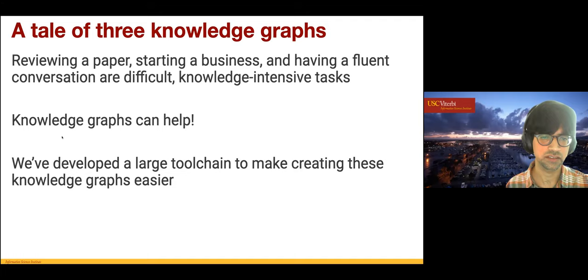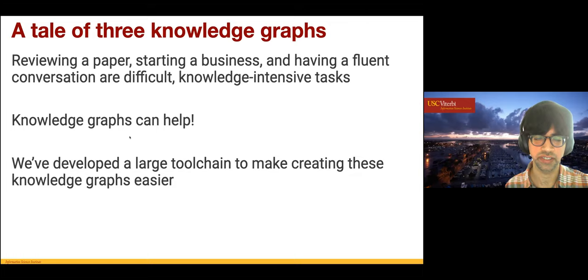To end: I told you about three knowledge graphs motivated by three hard problems — reviewing a paper and understanding its scientific context; starting a business where you need to understand competitors, relevant patents, and how to differentiate; and dialogue using AI agents providing common sense inferences that make dialogue more natural and human-like. All three knowledge graphs support these knowledge-intensive tasks, and all of this is made possible by the toolchain — the secret sauce that lets us take very different types of data and quickly generate useful knowledge for hard downstream tasks.